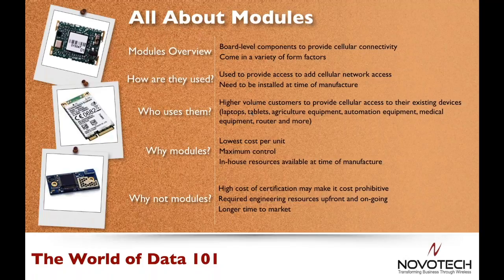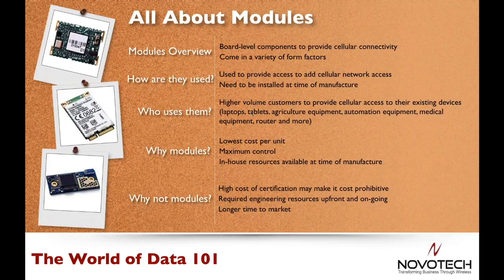On the other hand, we have cellular modules. Pretty much any device that connects to a cellular network has a cellular module inside — yes, your iPhone, Android device, and tablets all have these. They are small components placed directly onto the system board of a device at the time of manufacture. They do exactly what the module does in your cell phone: provide connectivity to the carrier's cellular network. Because they're installed at manufacture, they tend to be used in large deployments — things like agriculture equipment, smart garbage cans, and medical devices.